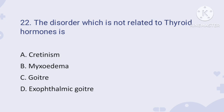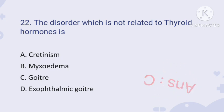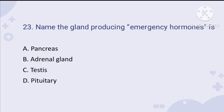Question number twenty-two: the disorder which is not related to thyroid hormone. Options are A: cretinism, B: myxedema, C: goiter, D: exophthalmic goiter. Cretinism, myxedema, and exophthalmic goiter are disorders related to thyroid hormone. However, goiter is caused due to lack of iodine — not due to thyroid hormone deficiency. Therefore, option C is the correct answer.